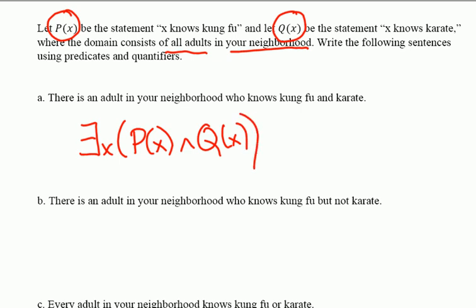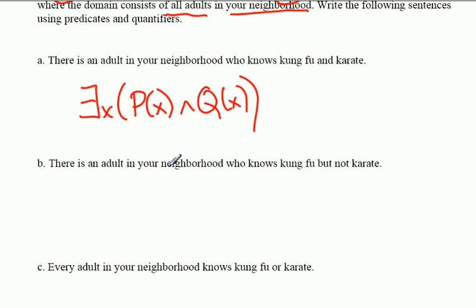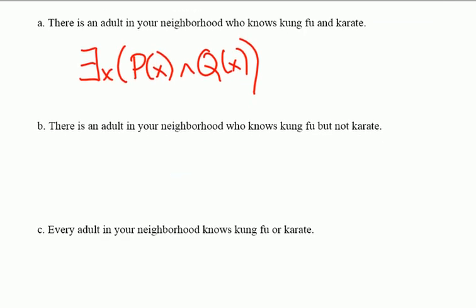That says there exists an x such that P(x) and Q(x). That really means there exists an adult in your neighborhood such that that adult knows kung fu and that adult knows karate. So a lot easier to say with logical symbols than in English. Look how nice and tidy that is.